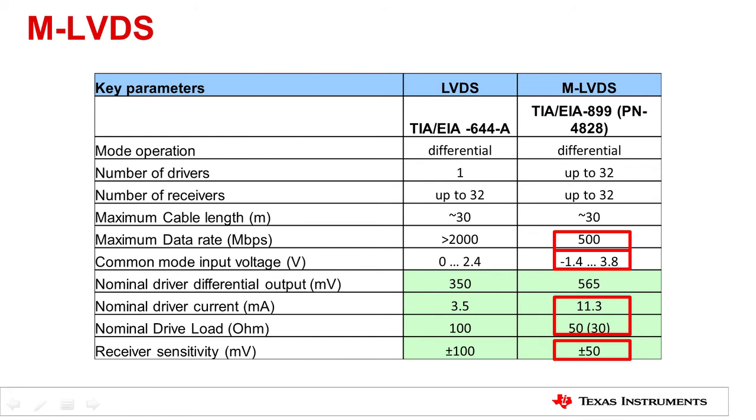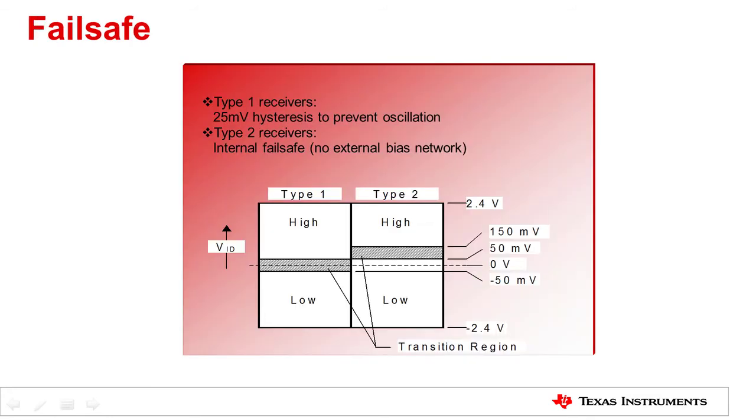An added feature to MLVDS standard is receiver failsafe. The LVDS standard does not specify any requirements for receiver failsafe. Receivers were simply specified to correctly detect the input states when at least 100 millivolts was available. The MLVDS standard has specified two classes of receivers to bring standardization to failsafe implementation. The standard uses the nomenclature type 1 and type 2 to refer to these two types of receiver classes. Type 1 receivers are similar to LVDS receivers with improved threshold. Type 2 receivers have an offset threshold. Bus input signals that are less than 50 millivolts are defined to be low state. Greater than 150 millivolts results in a high state.